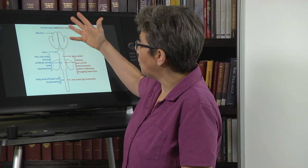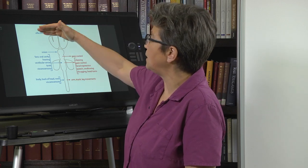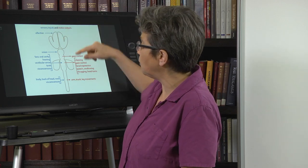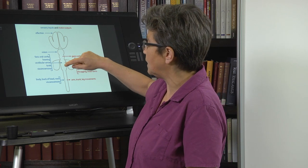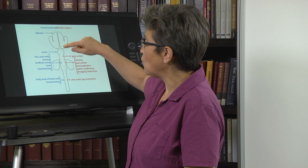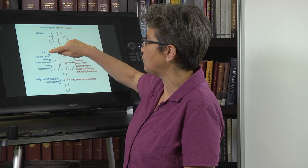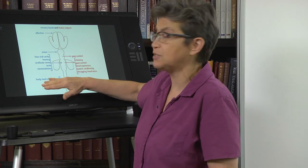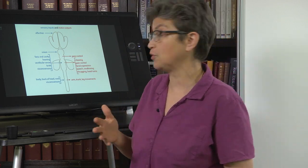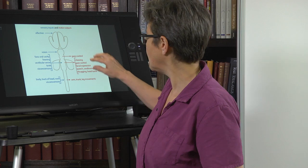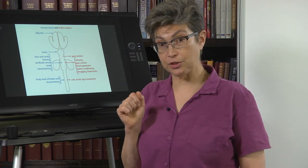Sensory comes into every part of the nervous system with the exception of the midbrain. But in Bobby, because he had a lesion here in the pons, what he had was a perfectly fine vision and olfaction, and disturbances in these other sensory functions.